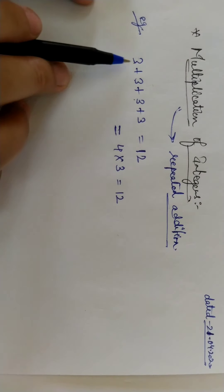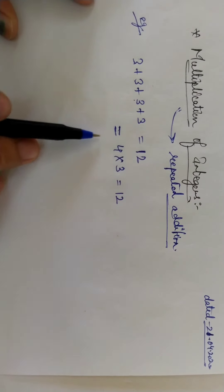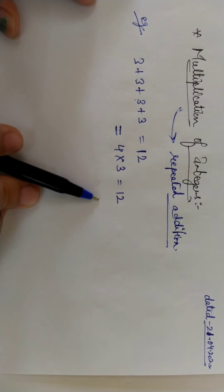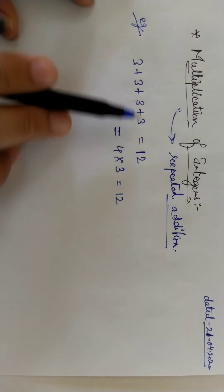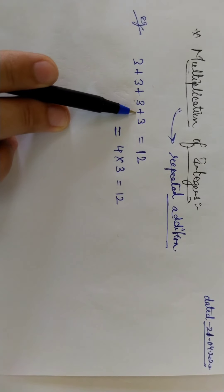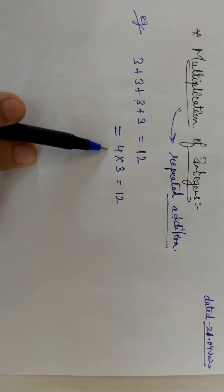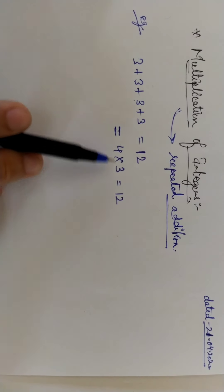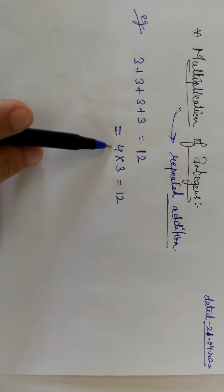You get the answer 12. Whether you use addition or multiplication, you get 12 — because multiplication is repeated addition. You are multiplying the number by the number of times it appears, so 4 times 3 equals 12.